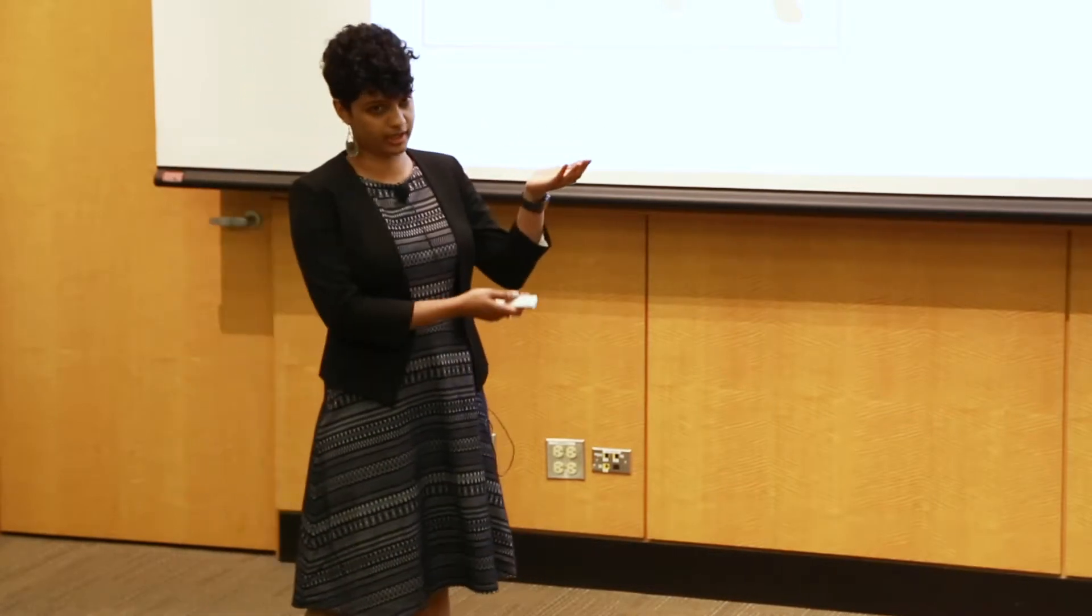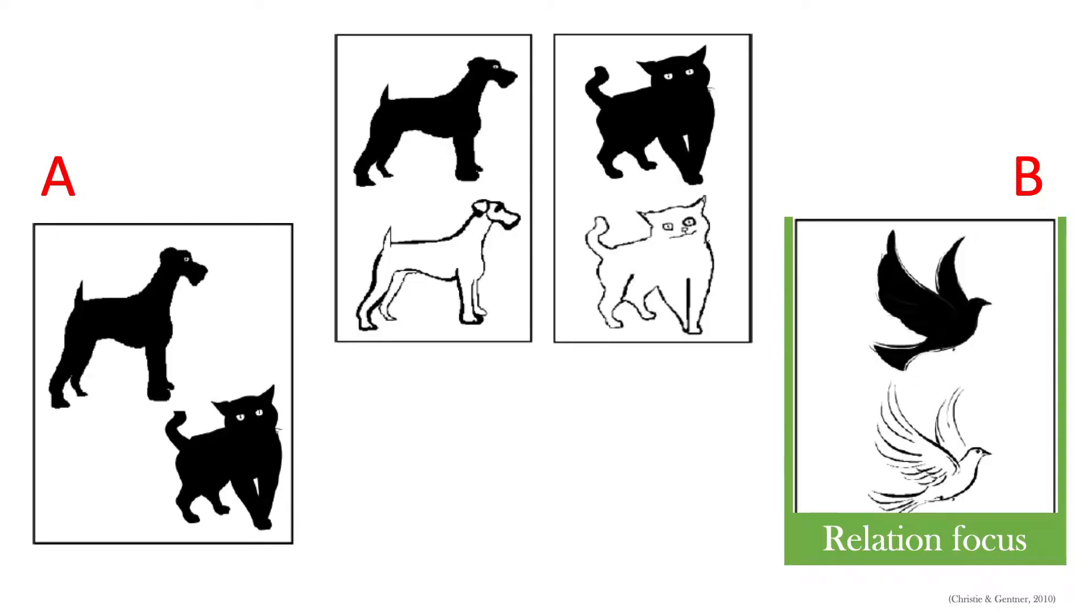In this case, the relation is black animal above a white animal. Choosing card B was termed relation focus and this was exactly what the experimenters were going for. So kids learn to pick the relational answer when they're given two example cards to compare between.